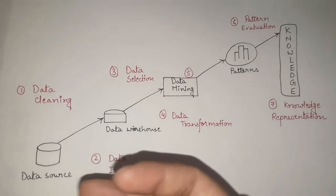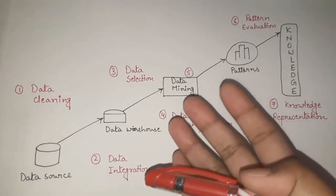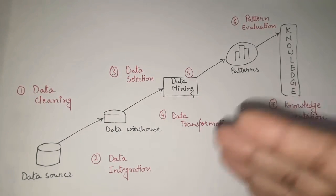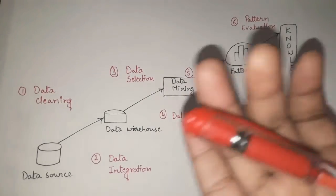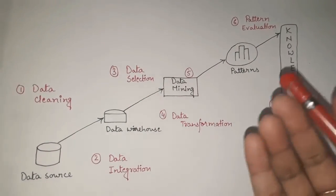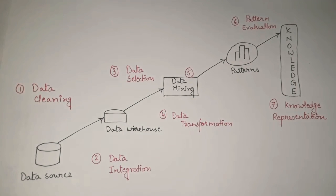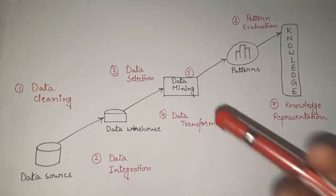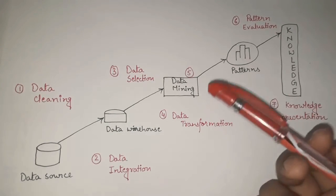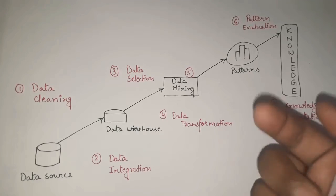After data selection, the fourth step is Data Transformation. The selected data can be in different formats because they come from heterogeneous sources. For further processing we want all data in the same format, so we perform data transformation — converting different types of data into one single similar form. After data transformation we get an acceptable, consistent, and similar format of data that can be accepted by further steps.